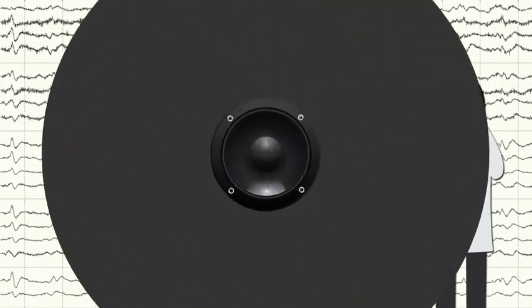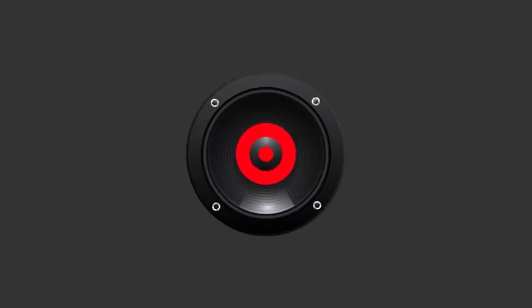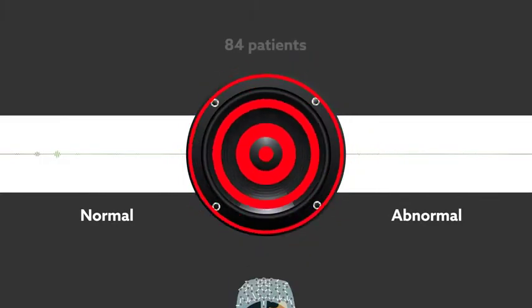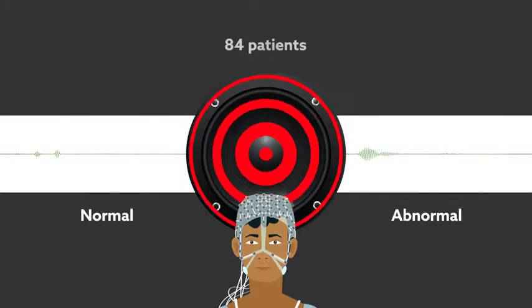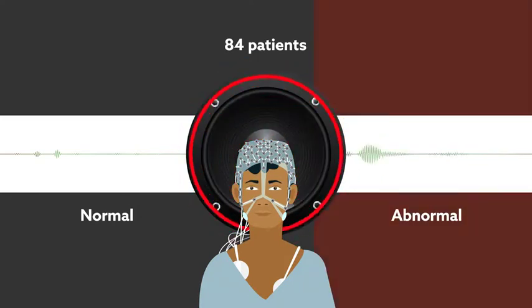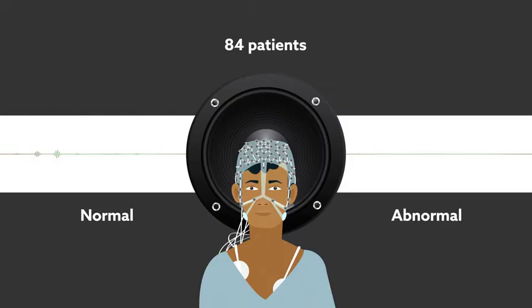To test whether listening to brain activity enables earlier seizure detection, the team created sound bites from normal and abnormal EEG data collected from 84 patients. Spikes in brain activity caused by seizures produce a characteristic loud rhythmic pattern that could be easily distinguished from the quieter, smoother activity of a normal brain.